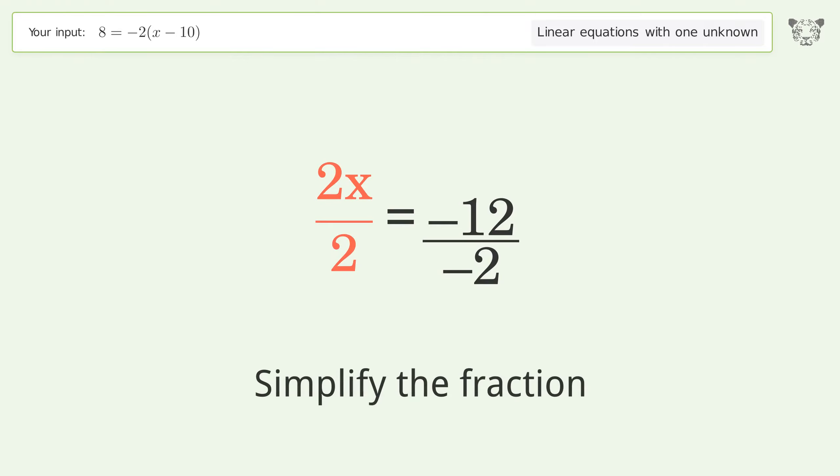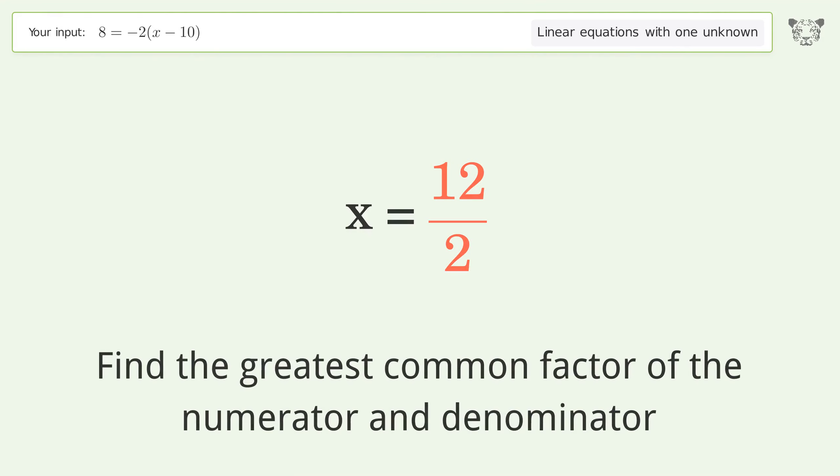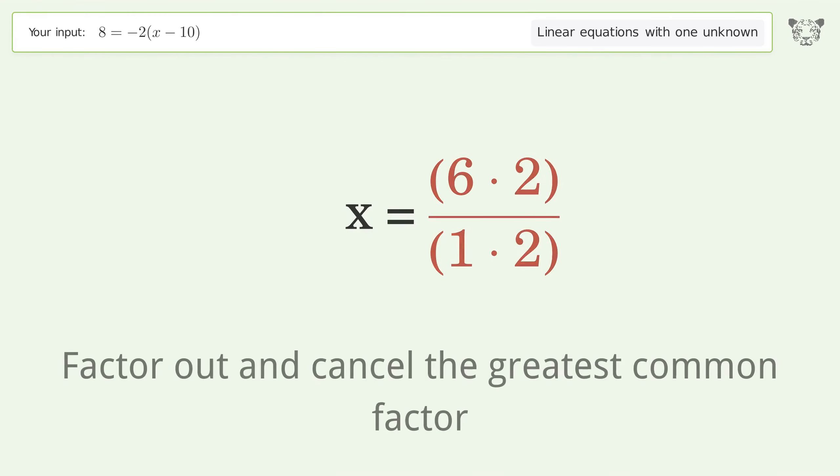Simplify the fraction. Cancel out the negatives. Find the greatest common factor of the numerator and denominator. Factor out and cancel the greatest common factor.